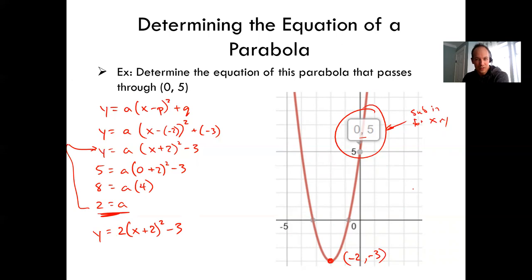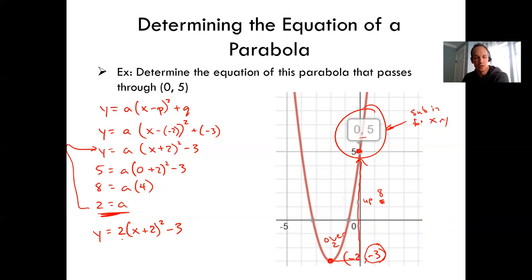One other approach you could have used is the pattern. Start at the vertex and note that to reach the given point you go over 2 and up 8 — from negative 3 up to 5. Normally when you go over 2 you go up 4 because you square it. But you went up twice as far as normal, so a had to be 2. Sometimes you can determine this just by looking, without doing any algebra.